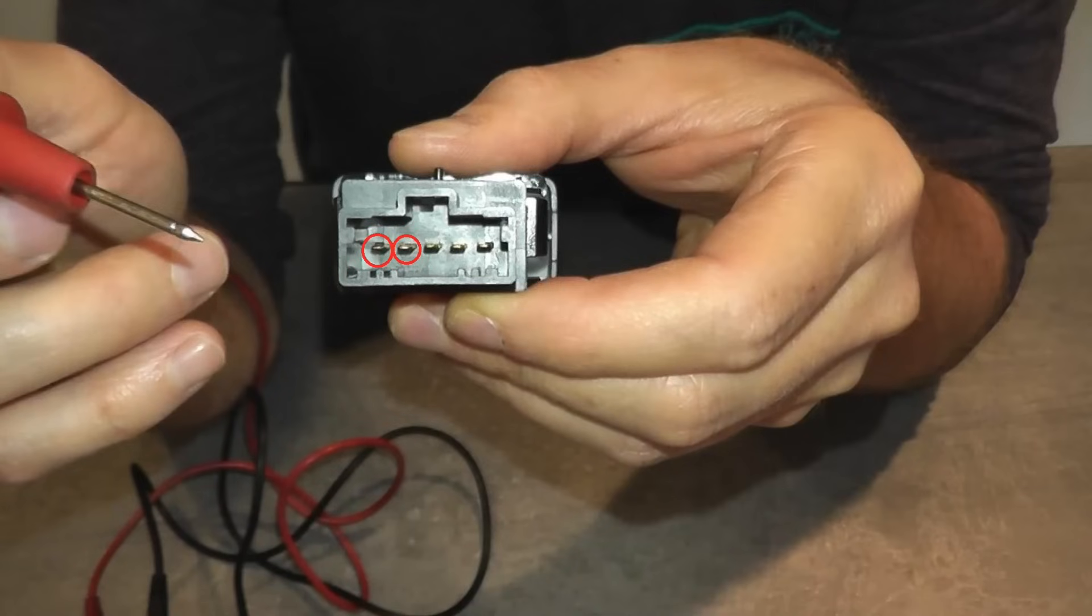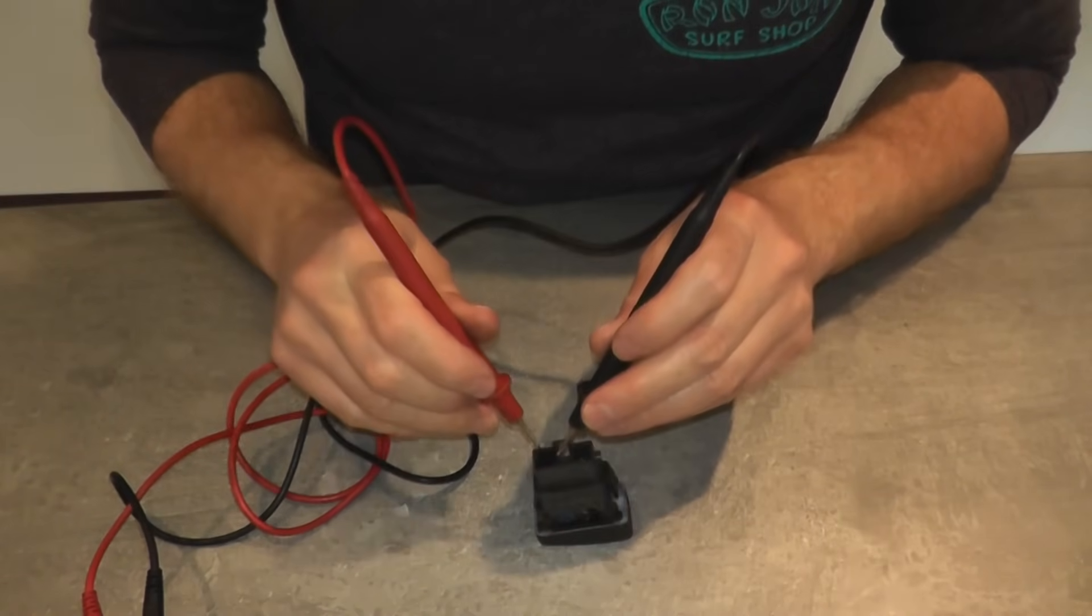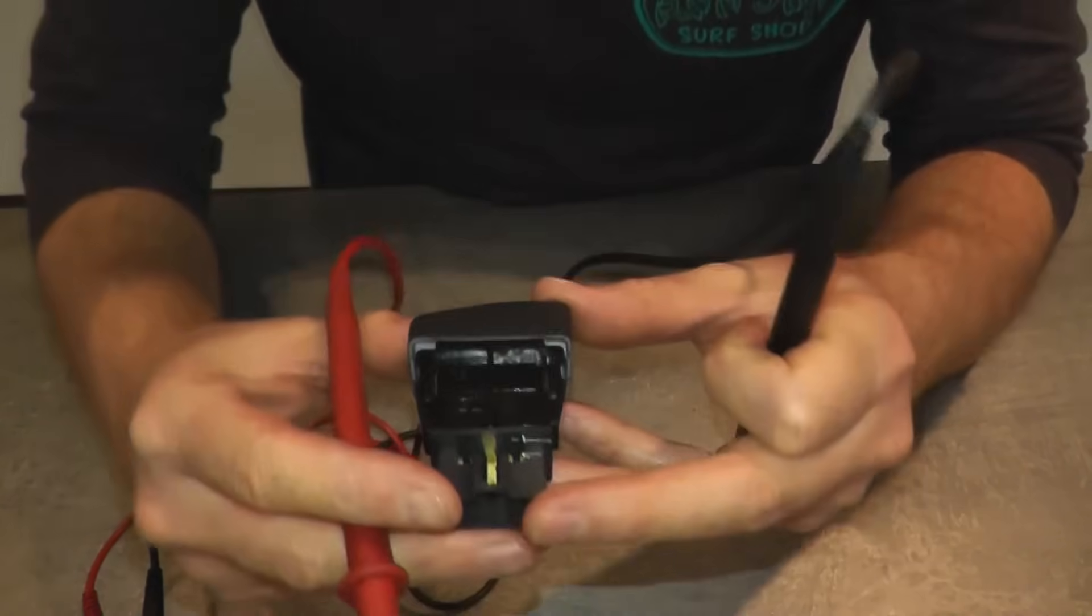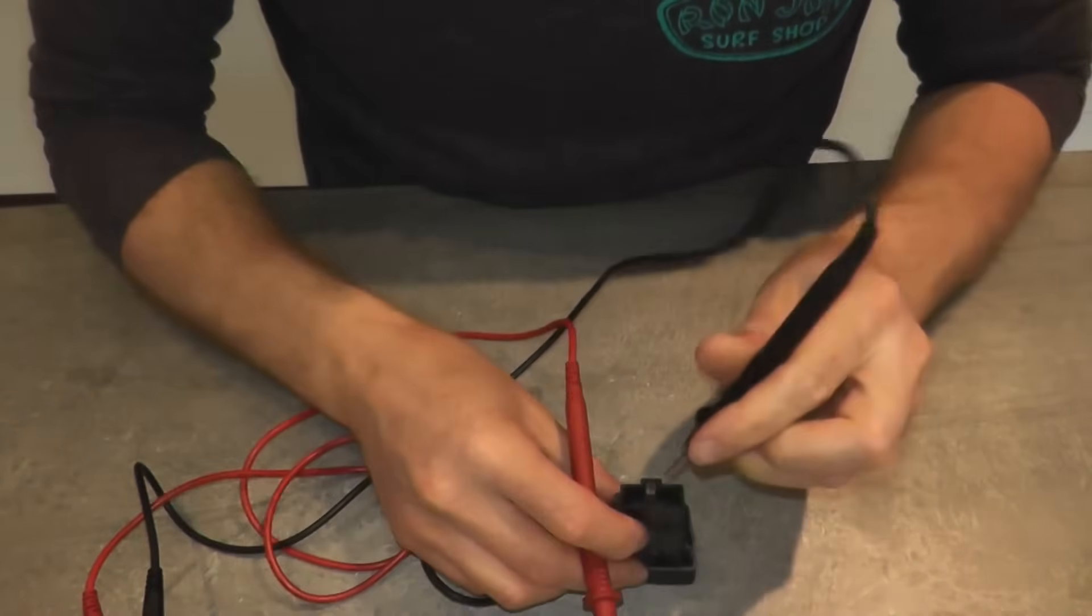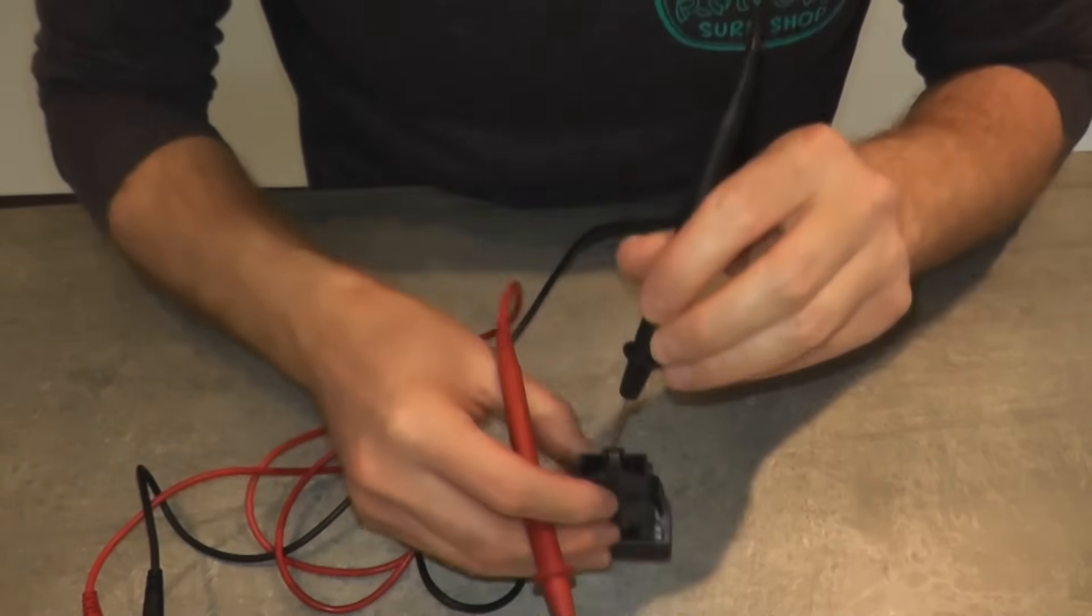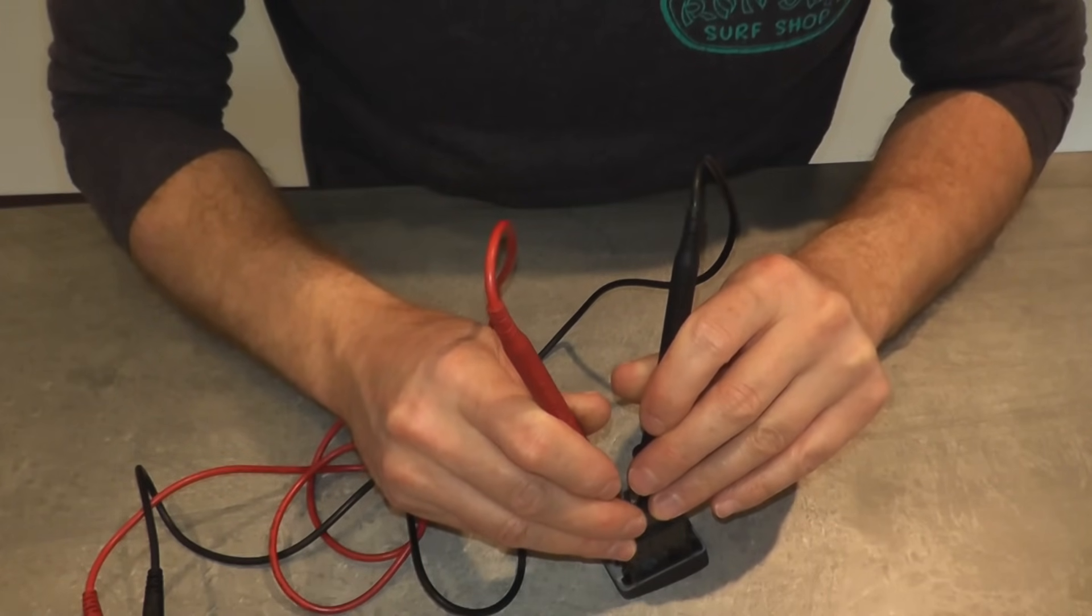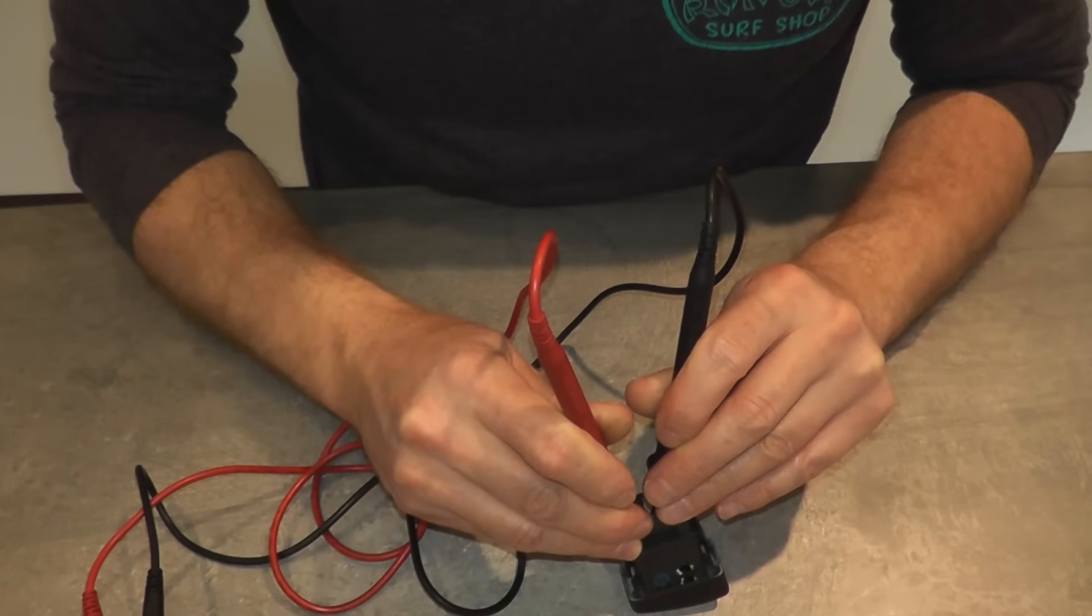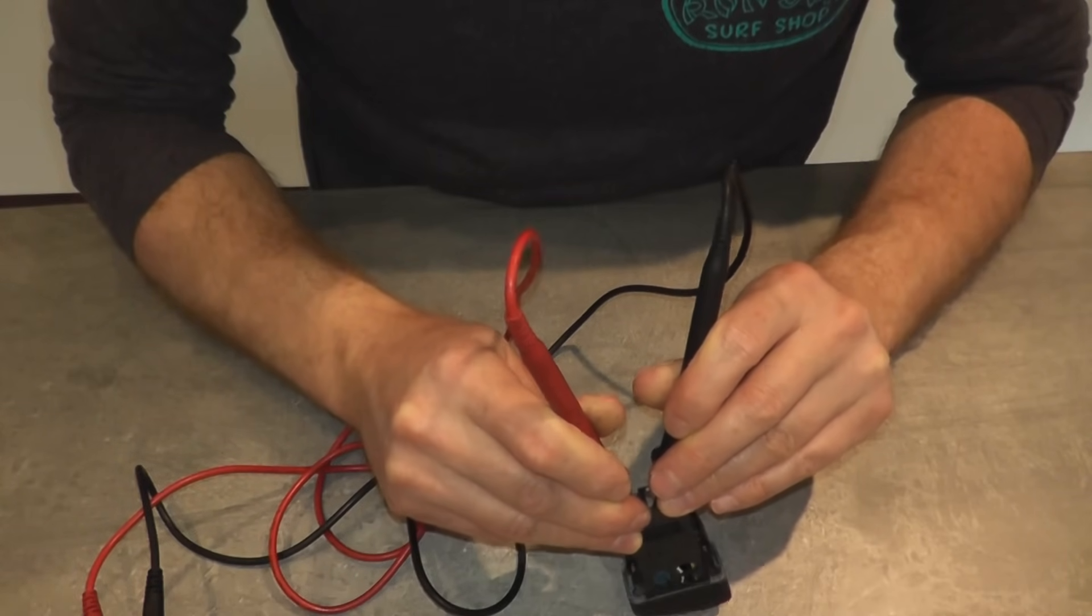So what you could simply do is take the multimeter, touch the two terminals, and then when you touch those two terminals, you want to press the switch. When you press the switch, that's when it makes the connection. So in this case, I have the black lead going to terminal number two, the red lead going to terminal number one, and I'll press the switch down. Up, down.